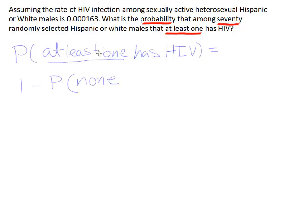See how that rhymes: 'at least one' equals one minus the probability of none. Then just fill in whatever you have. So in this case we'll say: one minus the probability that none have HIV.